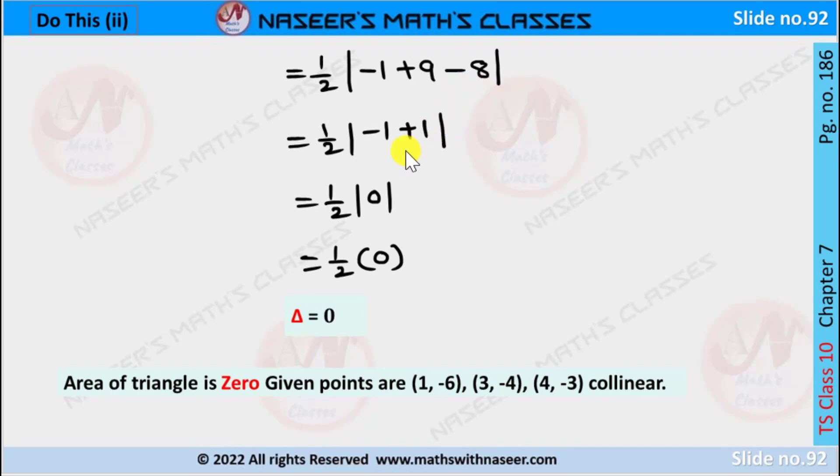Totally we can write it as 1/2 mod [minus 1 plus 1]. Minus 1 plus 1 is 0. Therefore 1/2 into 0 equals 0.